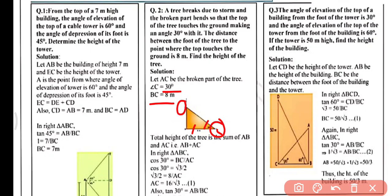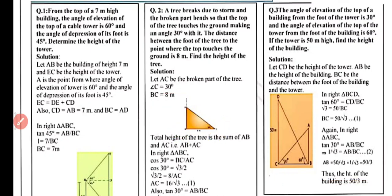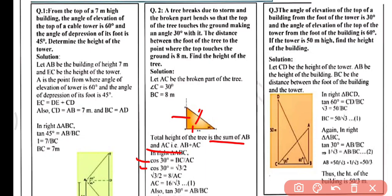The total height of the tree is the sum of AB and AC — the standing part and the broken part. Using cos30°: BC/AC = cos30°, so √3/2 = 8/AC, giving AC = 16/√3. Using tan30° in the same triangle: AB/BC = tan30°, so AB/8 = 1/√3, giving AB = 8/√3.